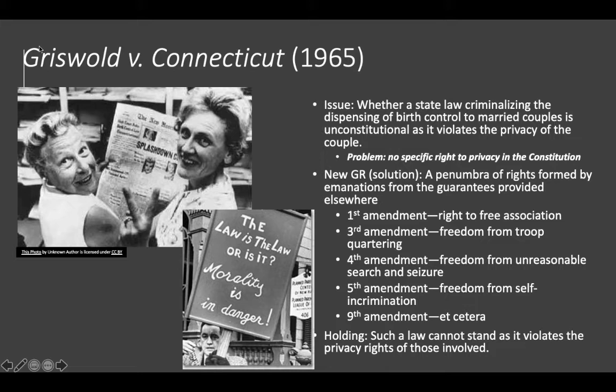The first case we'll deal with is Griswold v. Connecticut. It is a 1965 case in which a Connecticut law — which had stood for quite some time, it was an 1879 law — was passed that banned the use of any drug, medical device, or other instrument that furthered contraception. A gynecologist at the Yale School of Medicine, Dr. Buxton, opened a birth control clinic in New Haven in conjunction with Planned Parenthood, which was headed up in Connecticut by Estelle Griswold, hence Griswold v. Connecticut. Both of these individuals — the doctor and Griswold — were arrested and convicted of violating the law when they dispensed contraception to two married couples.